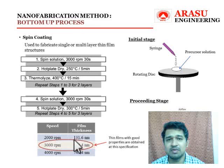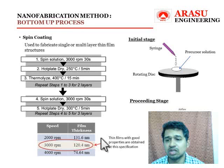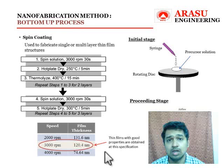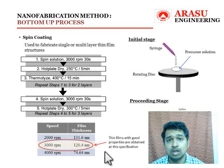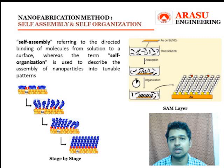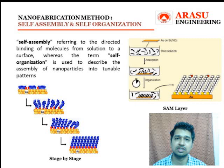For recommended specifications: at low speed, high thickness is obtained but cracks form during heat treatment. At high speed, the film thickness becomes negligible, making it unsuitable for applications. At medium speed around 3000 rpm, thin films show very good mechanical properties. With this we complete the fabrication techniques used for making nano thin films. The last fabrication technique is the ordering of nanosystems through self-assembly and self-organization.